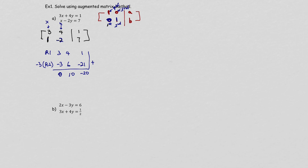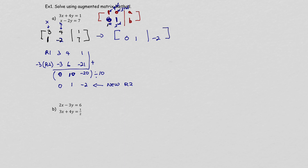The second step is to make the second column entry 1. How do I make this 1? Divide by 10. You cannot do something to one side and not the other, so divide the whole row by 10: you get 0, 1, negative 2. We'll call this new row 2. So new row 2 is 0, 1, negative 2. That gives us 0x + 1y, so y equals negative 2.